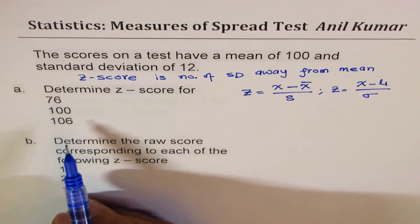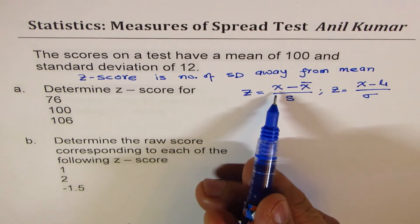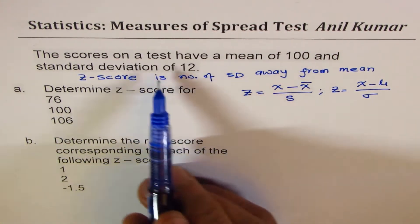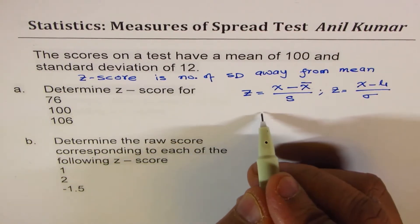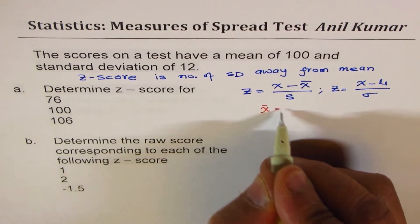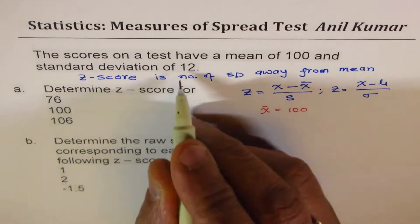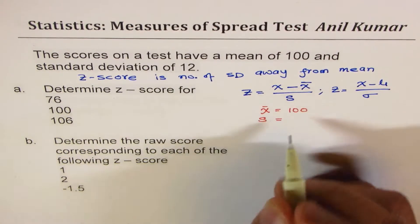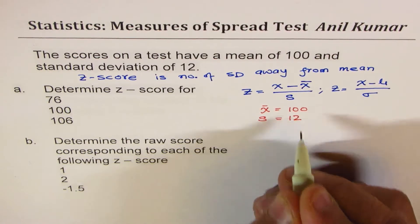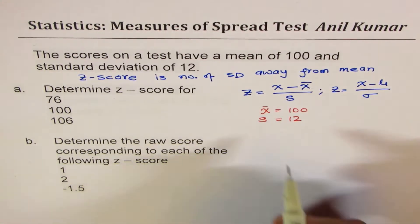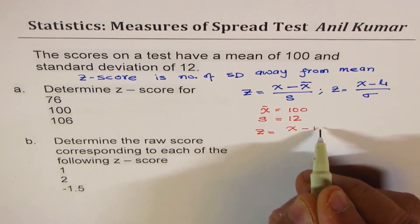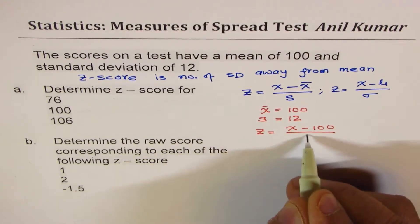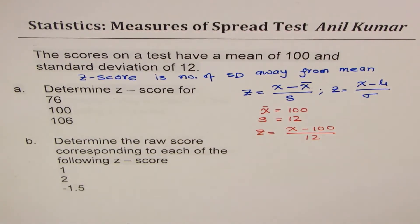In Case 1, we are given the values of X. We are also given standard deviation and mean. Here we are given that the mean is 100, standard deviation S is equal to 12, and we can substitute these values. So the Z-score could be calculated as X minus 100 over 12 for all these values.